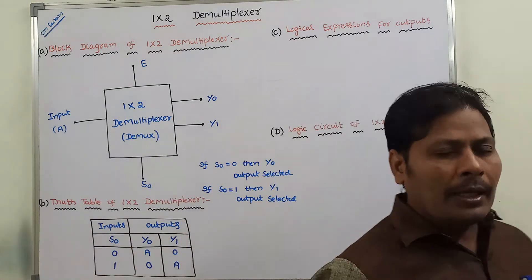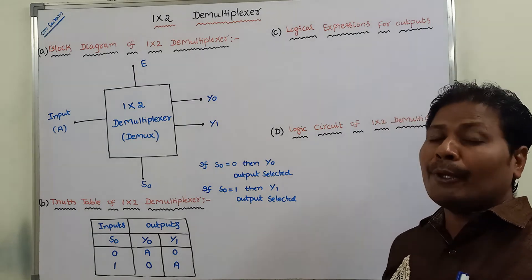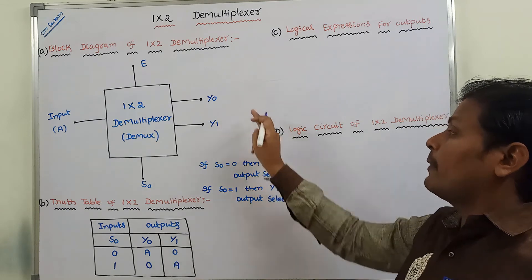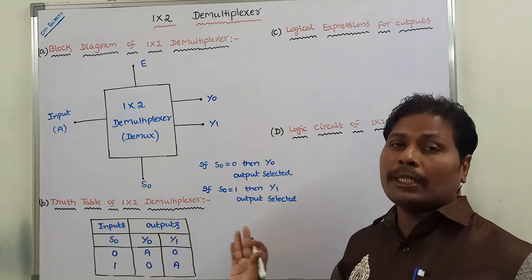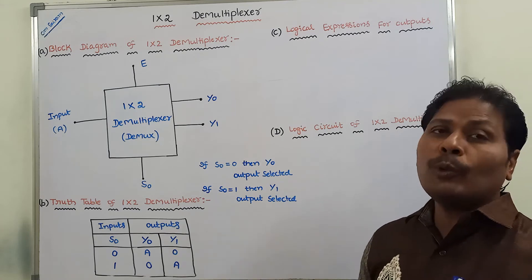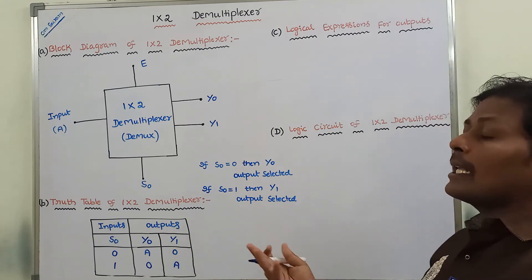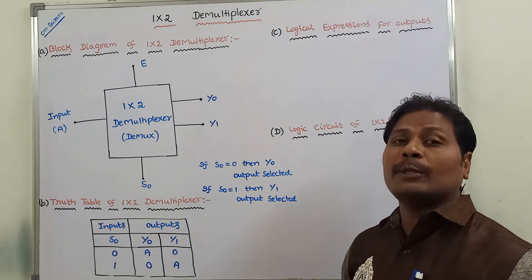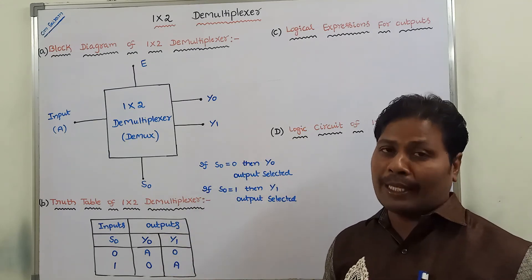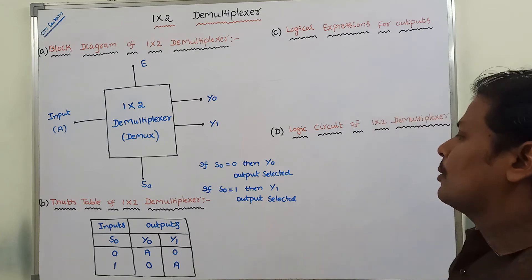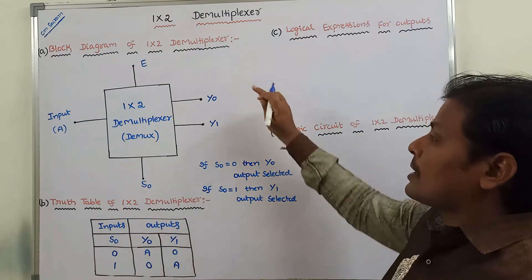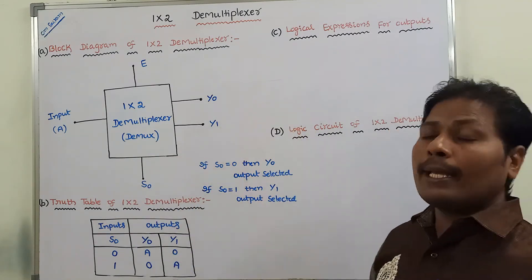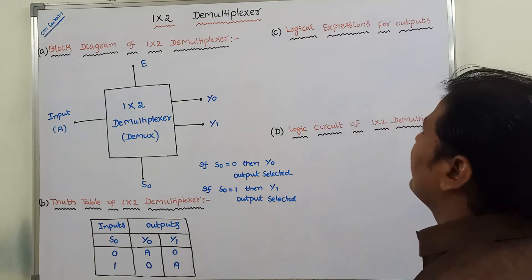This is the truth table of the 1 by 2 demultiplexer. In the input column, we take only the selection lines. In the output column, we write the outputs as they are. Based on the selection input value, whichever output line is selected, we write the input value A at that place. S0 value 0 means first output is selected; S0 value 1 means second output is selected.